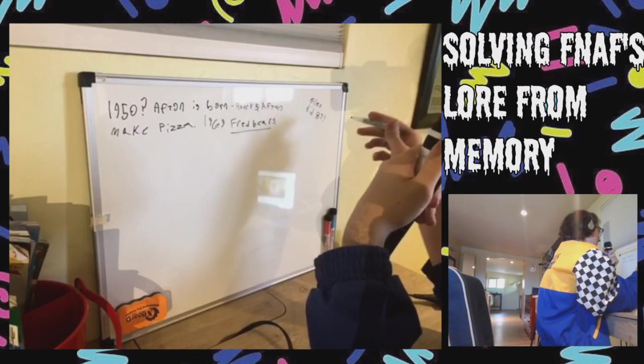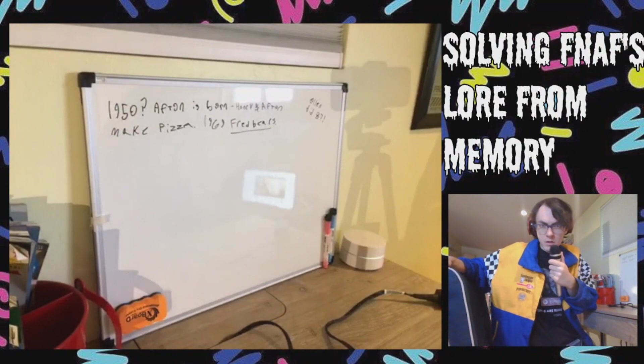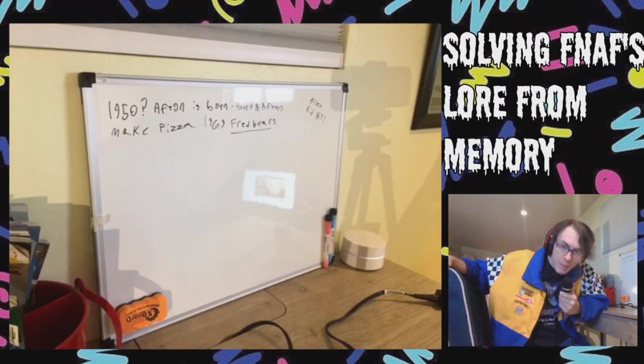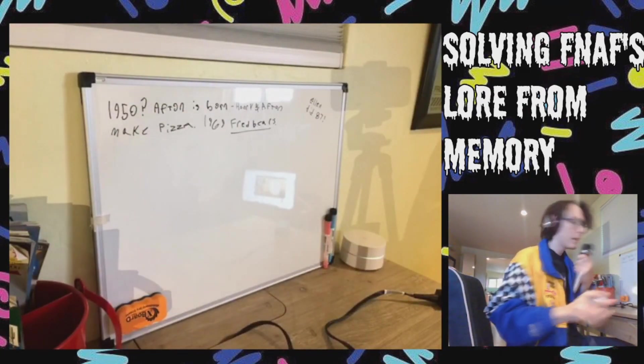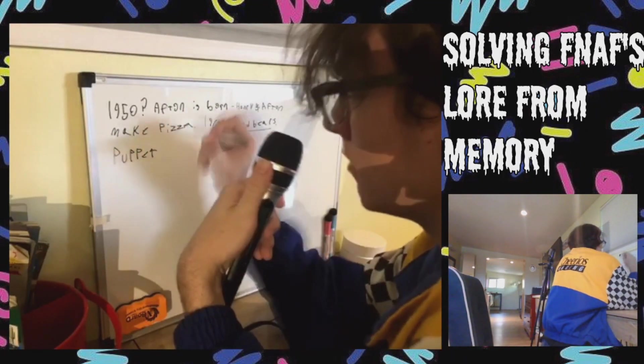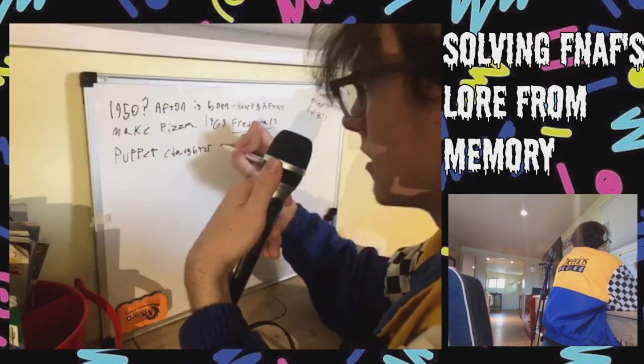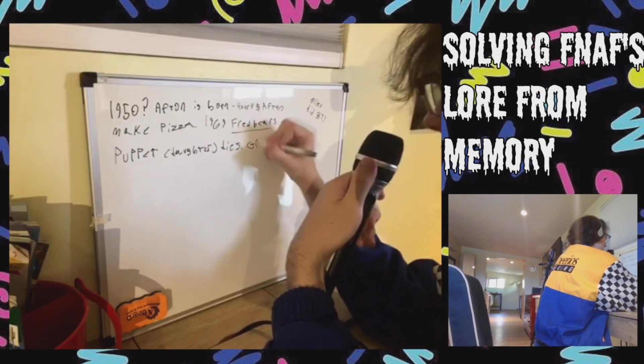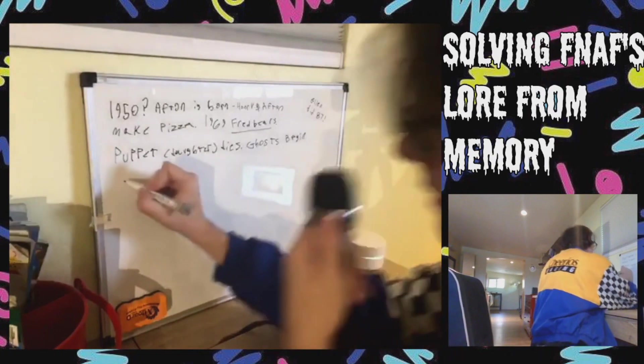Then he made, so did anything happen at the first Fred Bears? Was that when the puppet was, happened? I think it is. You know what? This is all from memory. We're just gonna let's keep it on moving. I don't care if it's right or not, I'm just saying things. The puppet, Henry's daughter dies here. Now the ghosts are here. The ghosts have begun.